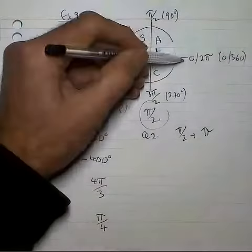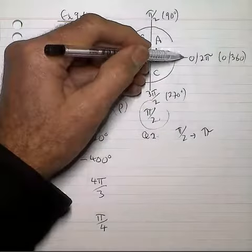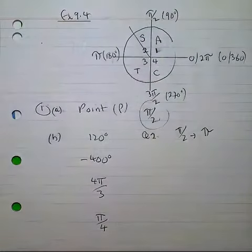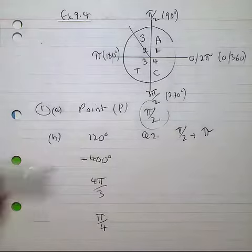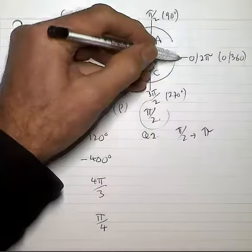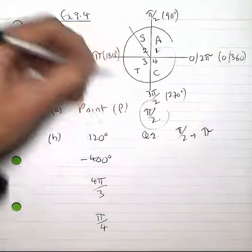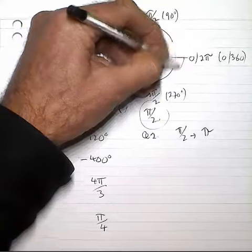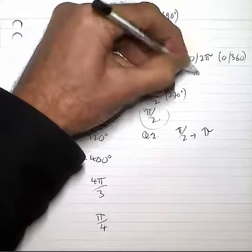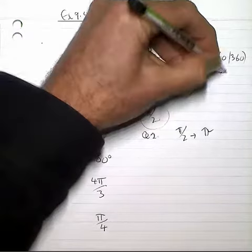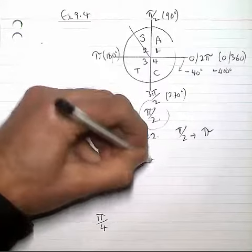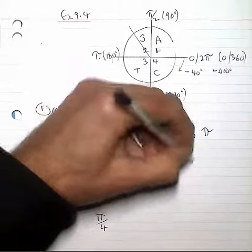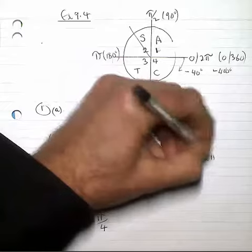Minus 400. Now, whilst in this course we don't deal too often with scenarios like this, minus 400 will be sweeping around once, minus 360 and minus 40 degrees further. Equivalent to minus 400 degrees fits us into quadrant 4, which is in the 3π over 2 to 2π quadrant.